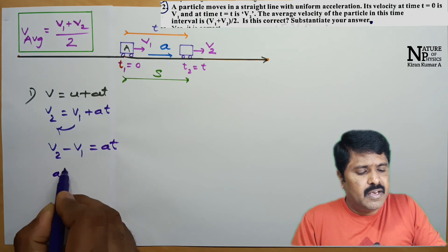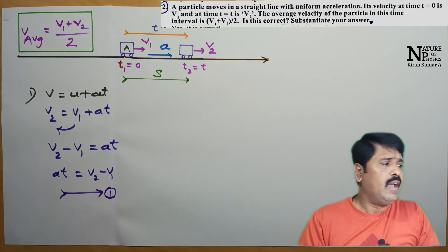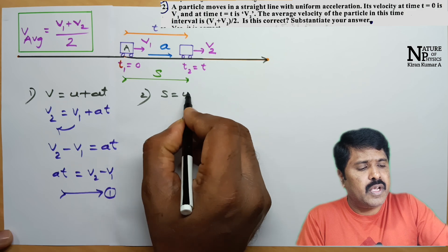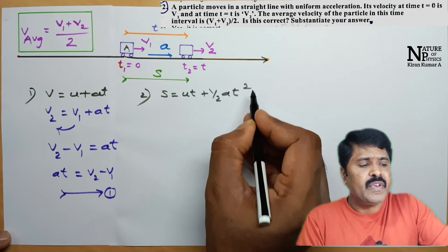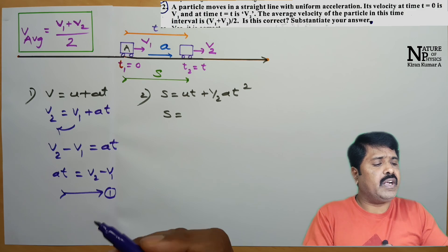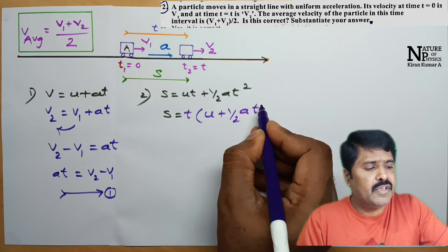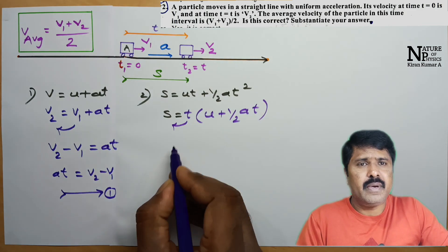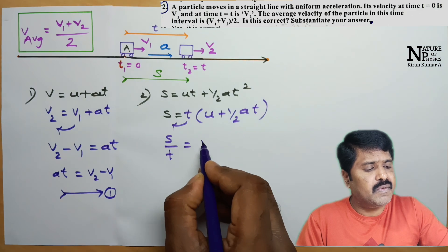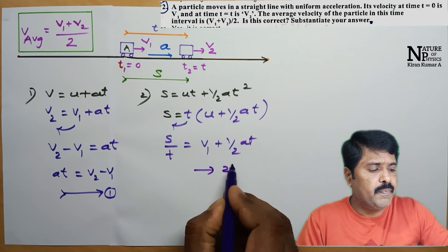The second relation I am going to use is S equals U T plus half A T squared. Factoring out T, we get S divided by T equals V1 plus half A T. This is equation number 2.